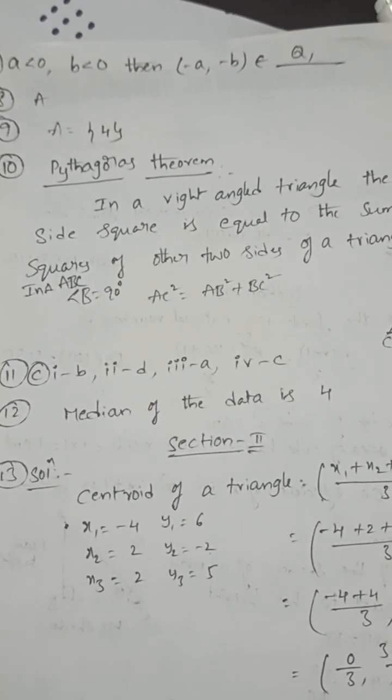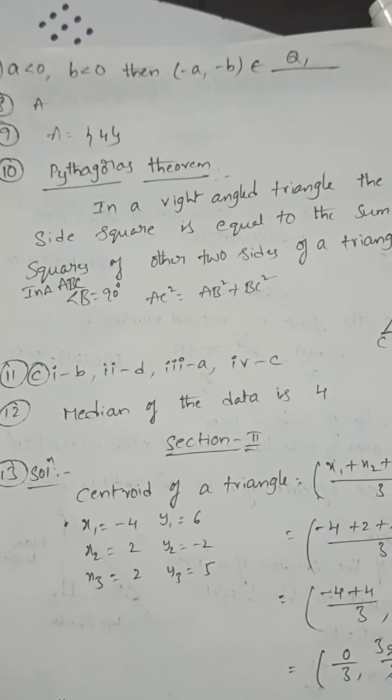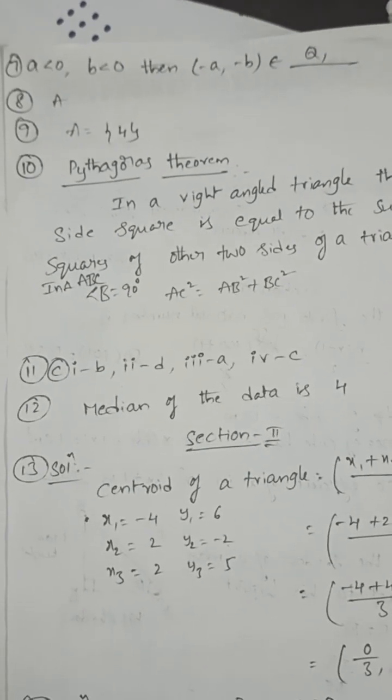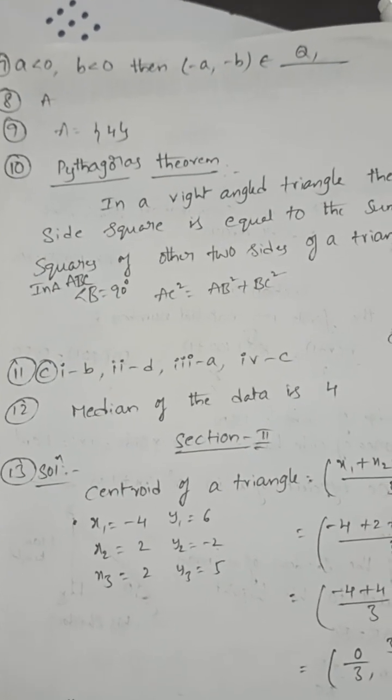a < 0, b < 0, then the ordered pair (-a, -b) is in the first quadrant.